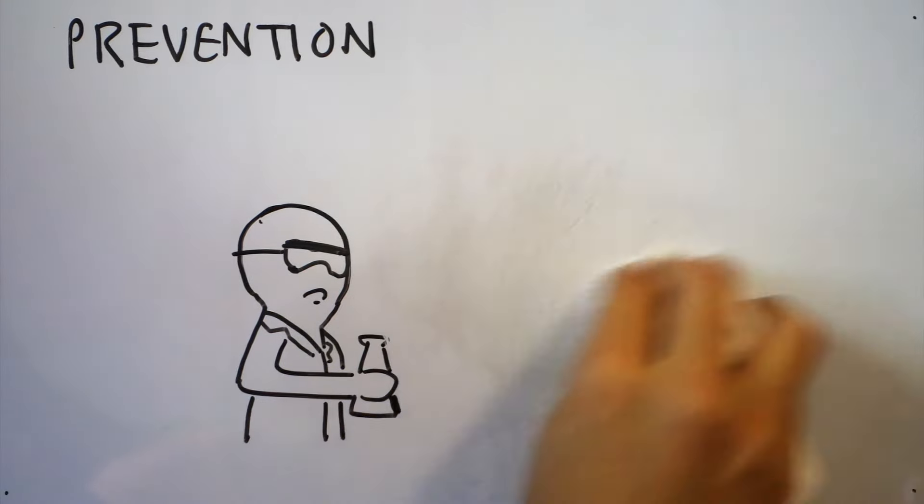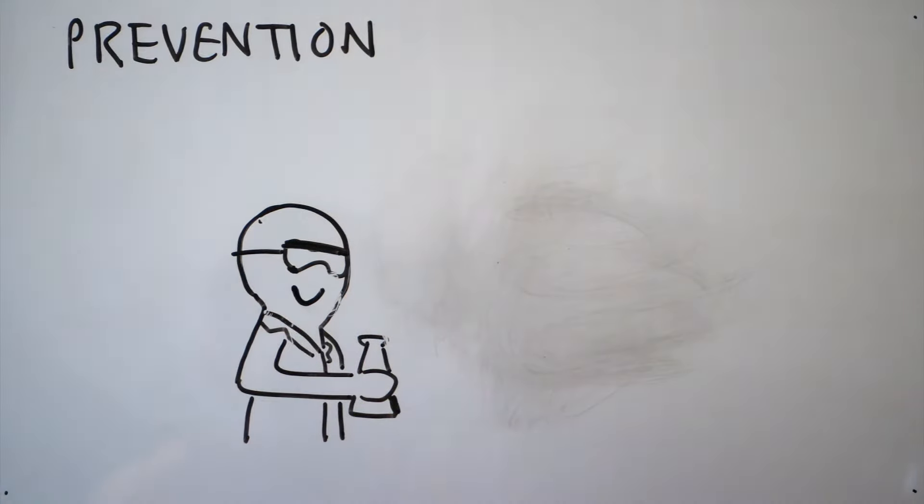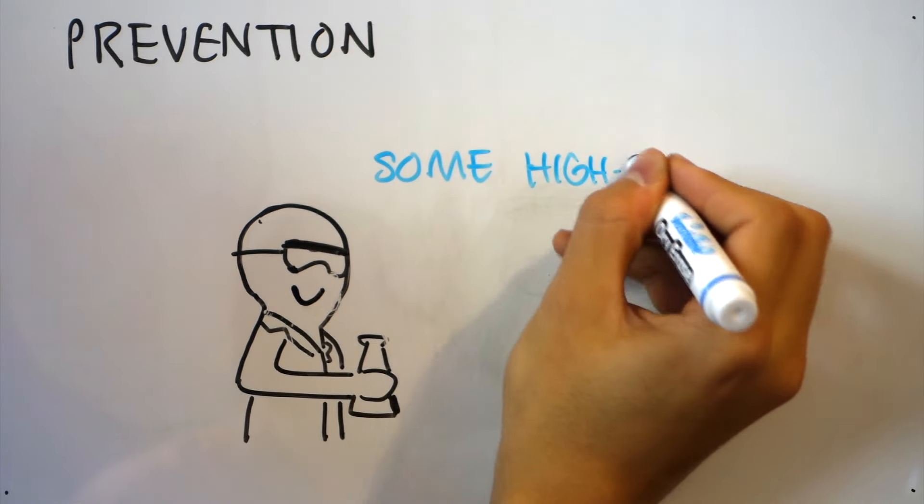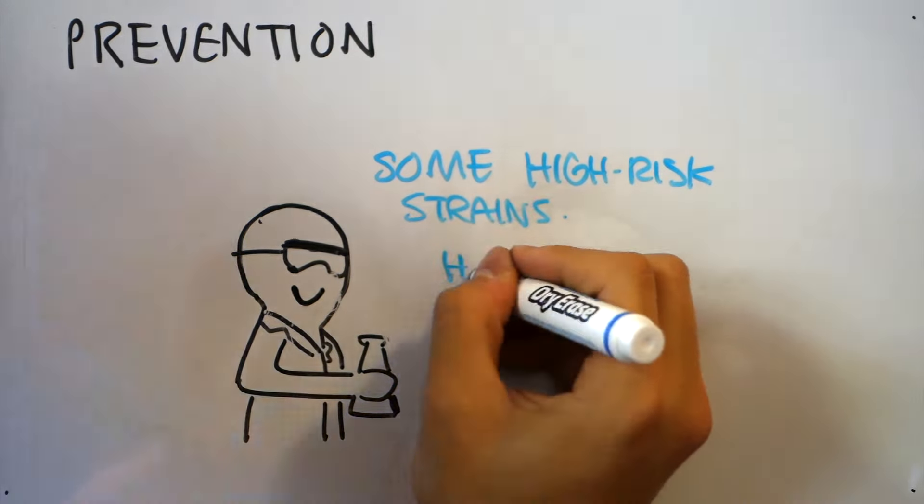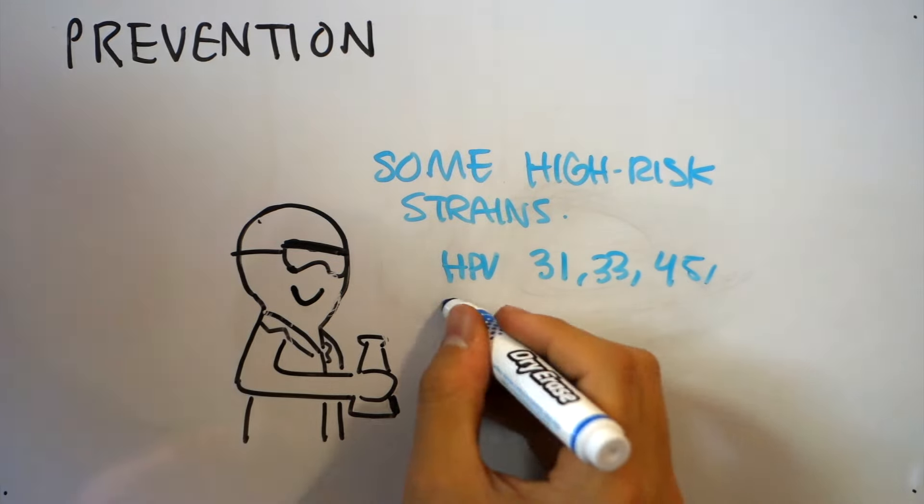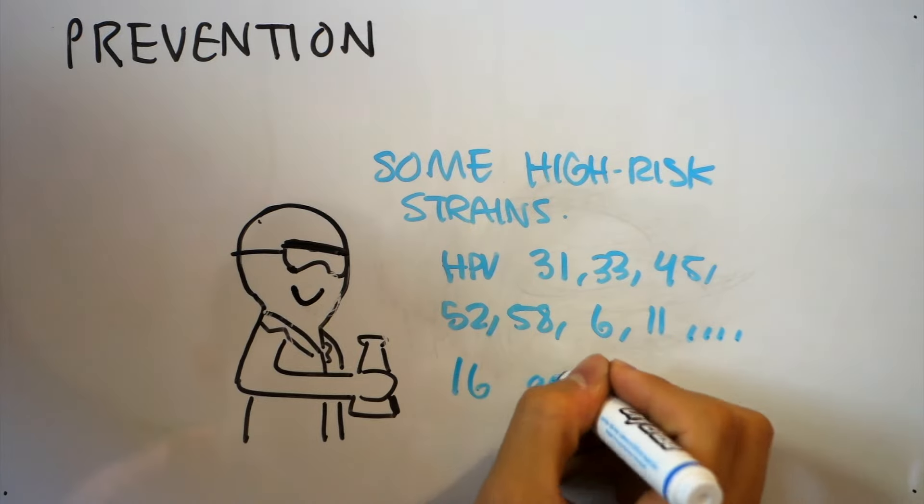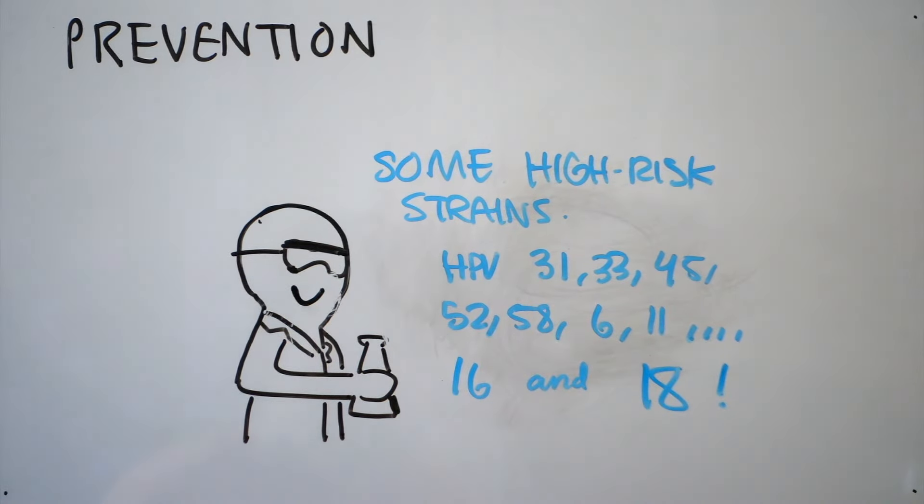As of December 2014, we currently have a 9-valent vaccine that protects against, you guessed it, 9 different strains of HPV: HPV 31, 33, 45, 52, 58, 6, 11, and most importantly, 16 and 18.